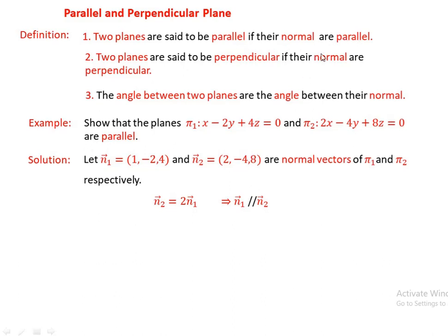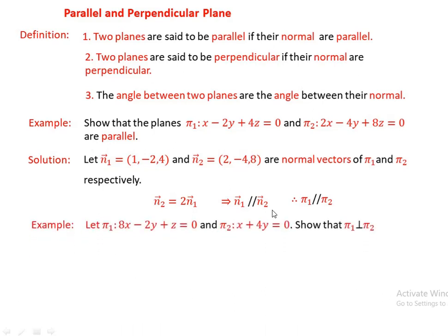We can see that n2 = 2 times n1, so n1 is parallel to n2. Therefore pi1 is parallel to pi2. If the normal vectors are parallel, the planes are parallel. Result: pi1 is parallel to pi2.